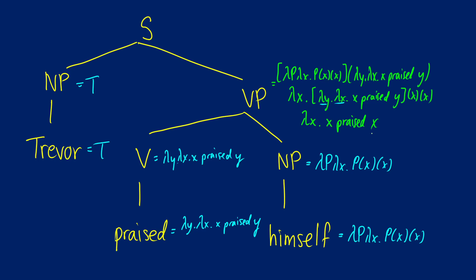Now, what's going to happen when we apply T to it at the sentence? Well, this is going to be true if and only if Trevor T praise Trevor T, because we're going to be ending up applying T to that function lambda X dot X praised X.